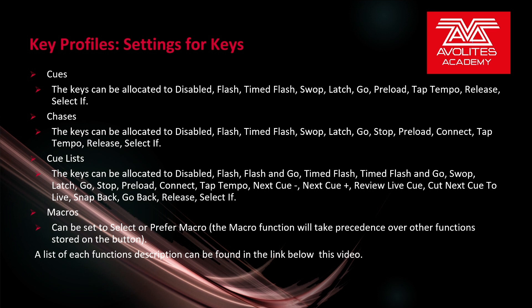Flash will bring the playback on while held, releasing it when you let go. Timed flash will follow the fade in and fade out times of the playback, or the separate timed flash times so you can have a different fade in or out when using the flash key. Swap will swap to that playback, temporarily killing other playbacks; when released, the other playbacks return. Latch will lock that playback on. Go is the go button. Preload is like move-in-dark but for a cue — it moves fixtures that have no current output into their position, color, and gobo so they're preset in place. Tap tempo works just like it sounds. Release releases that playback. Select if selects all the fixtures contained in that cue.